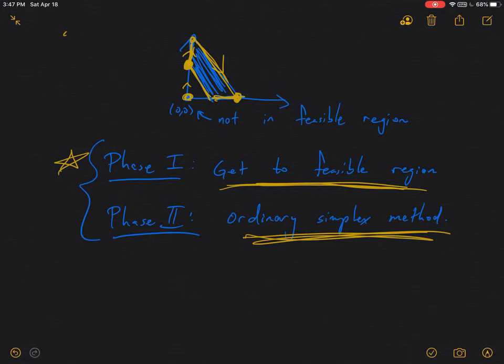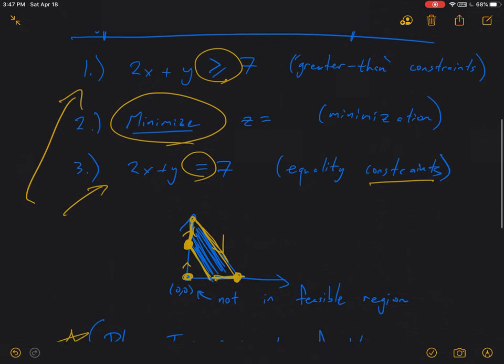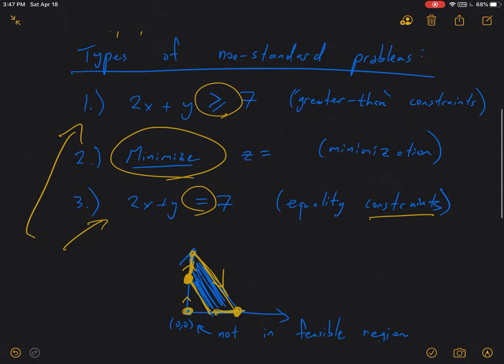Phase two is what we've already been using. It's just the ordinary simplex method, which allows you to take some simplex tableau and then continue pivoting until you get rid of all of the negative indicators and can just read off the optimal solution. So phase two is what we've already been doing. But for phase one, we're going to have to do some new steps, depending on which of these non-standard problem types we want to be facing.